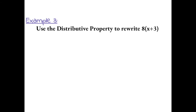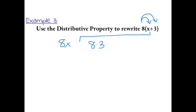Example 3: use the distributive property to rewrite 8 times the sum of x plus 3. Again, when using the distributive property, the number on the outside, 8, needs to be multiplied with the first number. And then the number on the outside needs to be multiplied with the second number. Bring over your symbol in the middle and simplify.